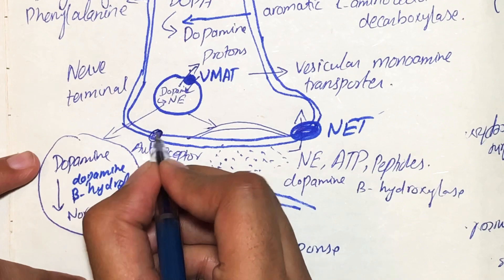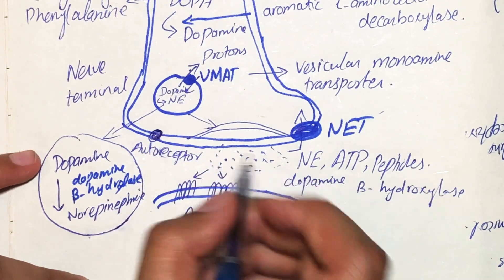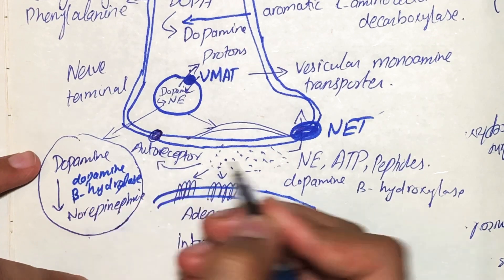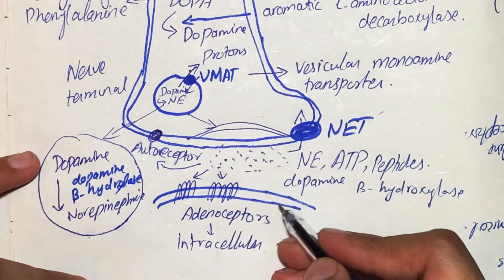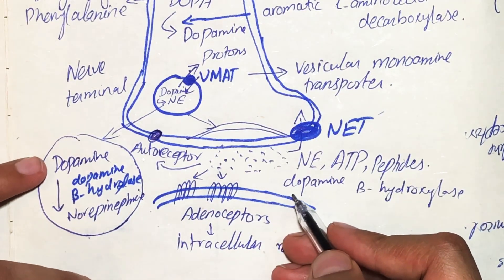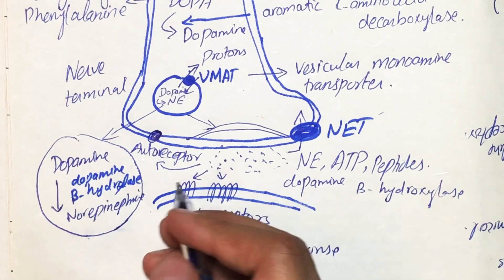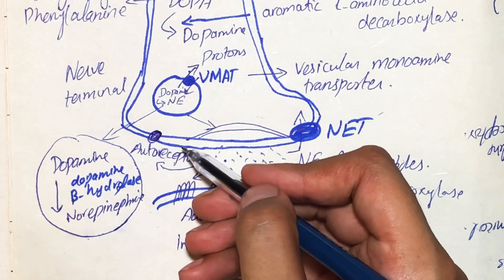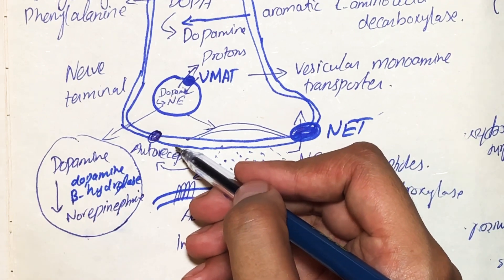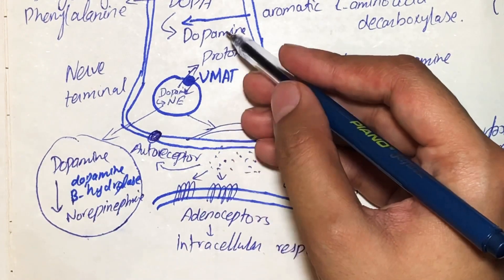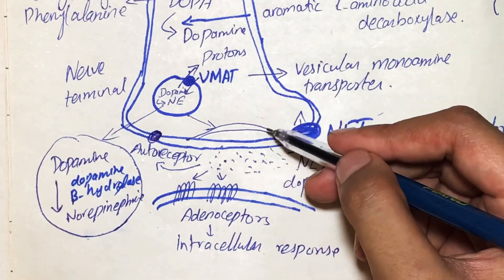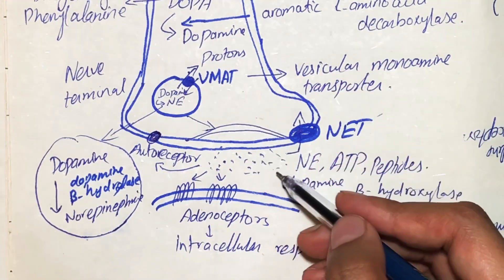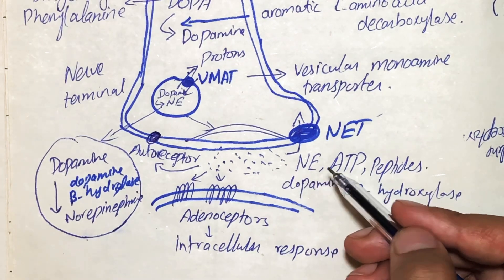The autoreceptor on the presynaptic membrane acts as a shutdown button for norepinephrine release. When this autoreceptor is activated, no further vesicles fuse with the presynaptic membrane, and therefore no further release of norepinephrine occurs.